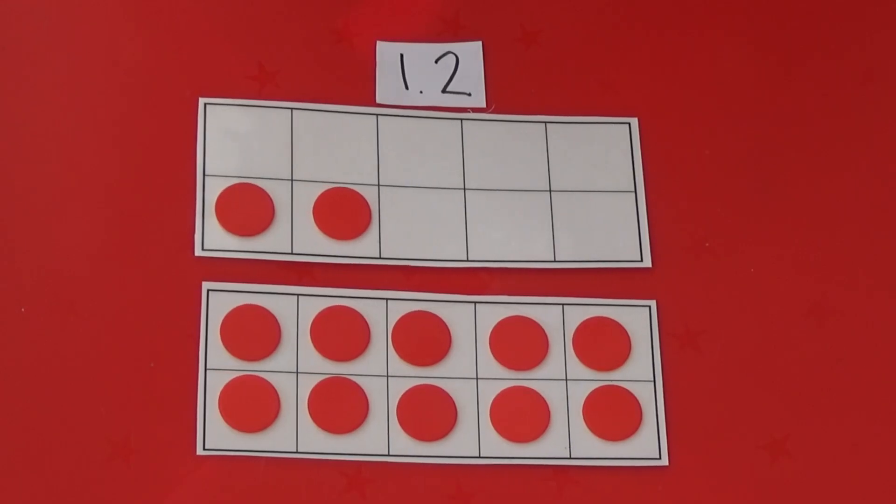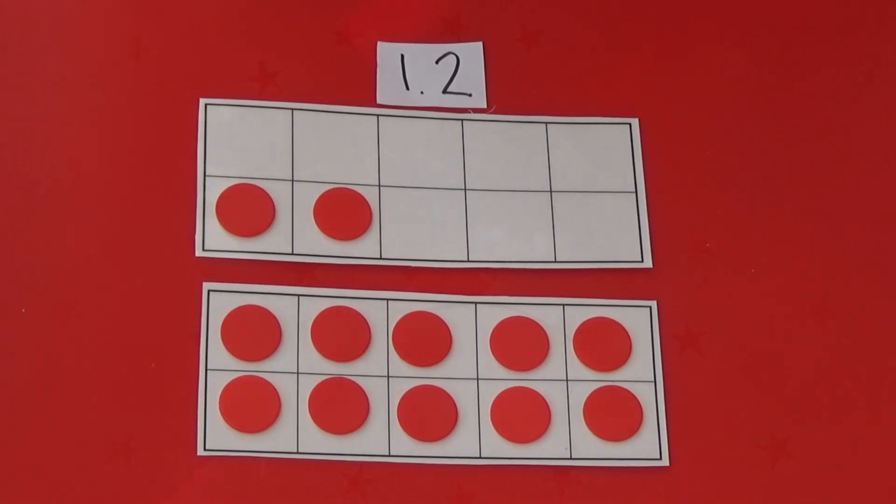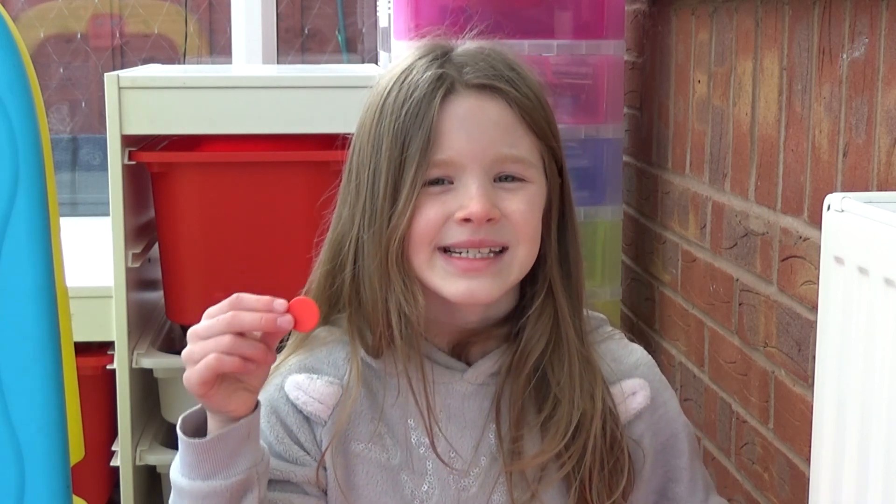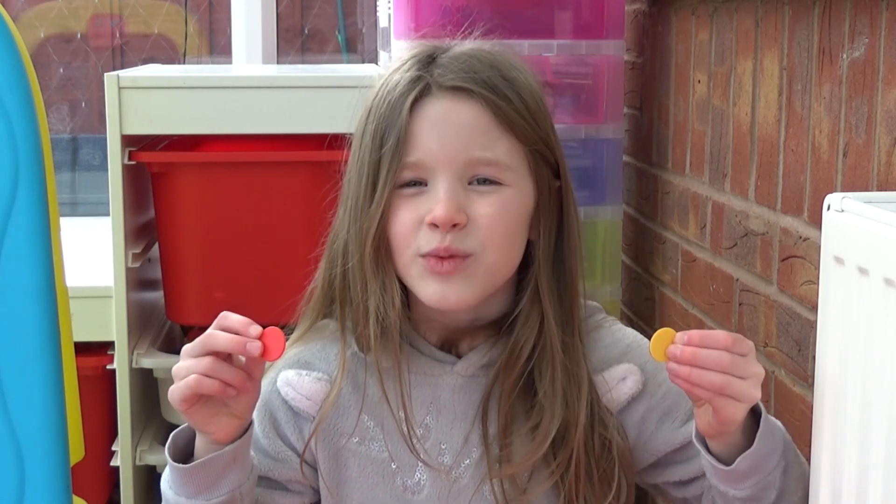And here I have filled one whole tens frame and two in the second tens frame. So the number I am representing is one point two. In this next activity the red represents tens and the yellow represents ones.